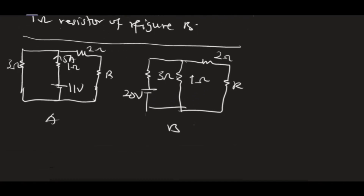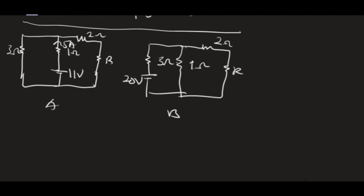We need to find the current in the 1-ohm resistor of figure B, and the current will flow in this direction because the source is driving it this way. To use reciprocity, we use this figure as a guide. Everything in these figures is the same — 3-ohm, 3-ohm; 1-ohm, 1-ohm; 2-ohm, 2-ohm; R and R — but the only difference is 20 volts here versus 11 volts displaced.